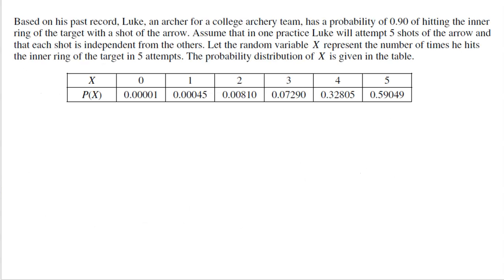Here's another example. Based on his past record, Luke, an archer for a college archery team, has a probability of 90% of hitting the inner ring of a target with a shot of an arrow. All probabilities come with something for free, so that means there's a 10% chance he does not hit the inner circle. Let's assume that in practice, Luke will attempt five shots of the arrow and each shot is independent of the next. We're going to let the random variable X be how many times he hits the target in the five attempts. He can either hit the target zero times, one time, two times, three times, four times, five times. That is listable, has a beginning, has an end, whole numbers only. This is a great example of a discrete random variable.